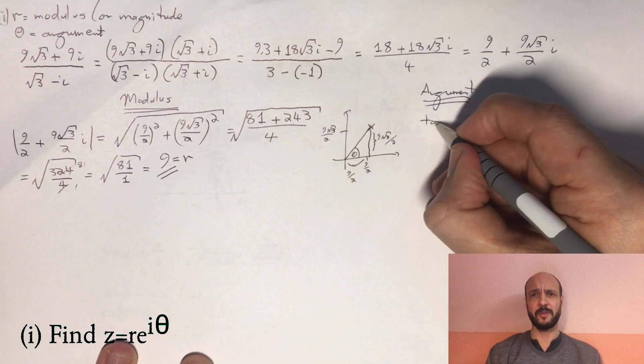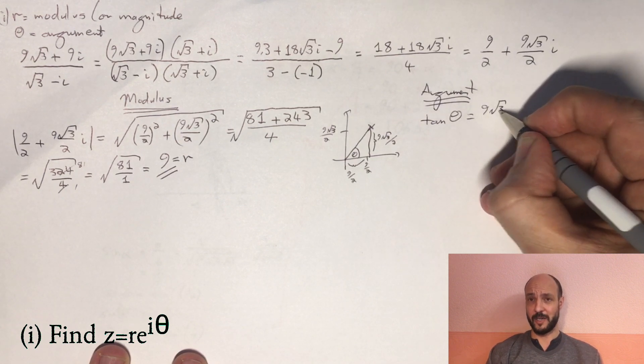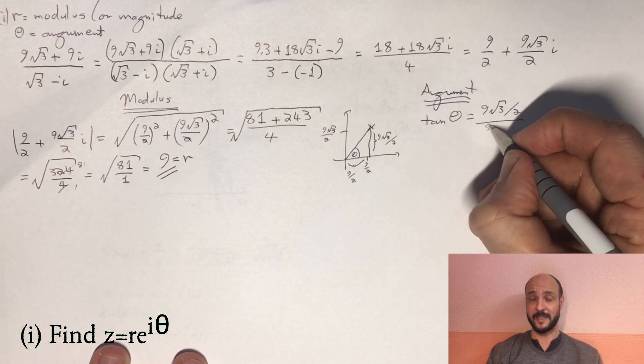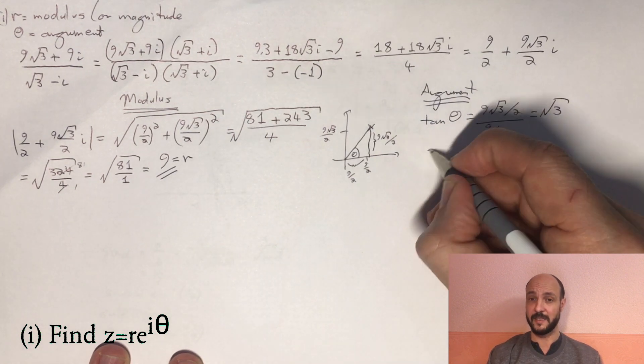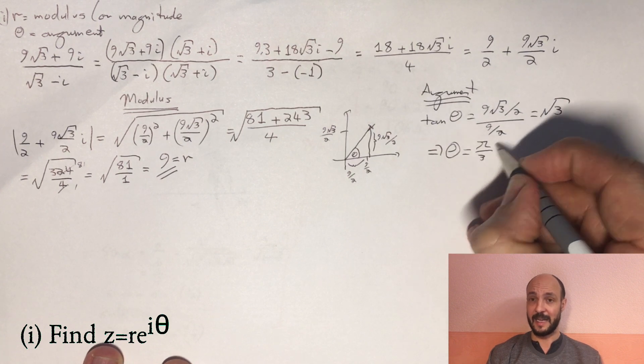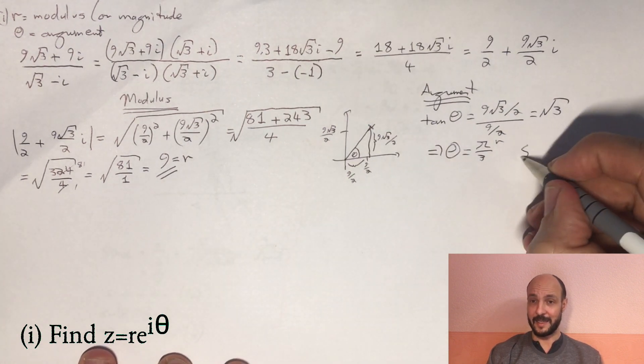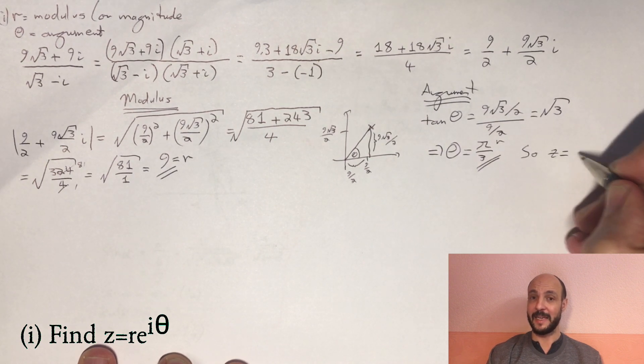So if tan θ is √3, that's the standard angle that we don't need our calculator for. We know straight away that theta is 60 degrees, or as they've given us the question in radians, we'll stick with radians, π/3 radians. So we can write our z as re^(iθ) is 9e^(πi/3).